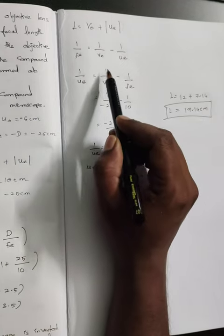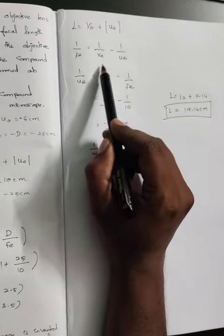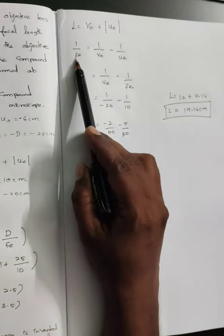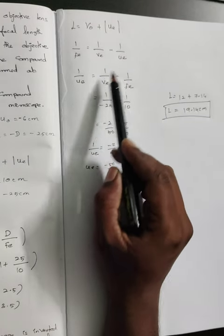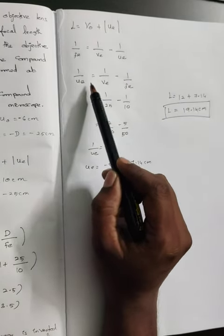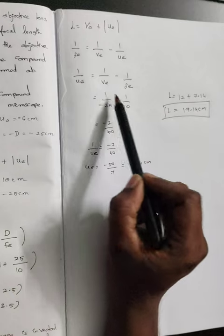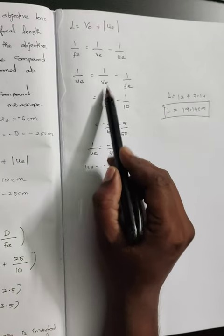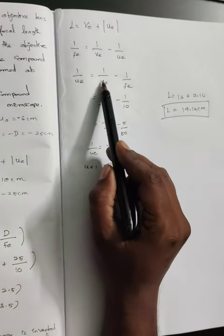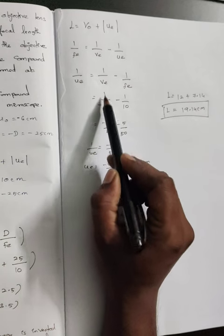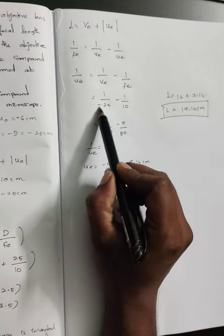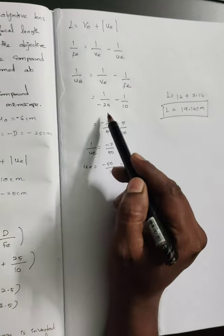Using 1 by FE equals 1 by V minus 1 by UE, I rearrange the formula and substitute values. Here I substituted minus 25 instead of V. Whenever V comes, use sign convention; for D, put the direct number.